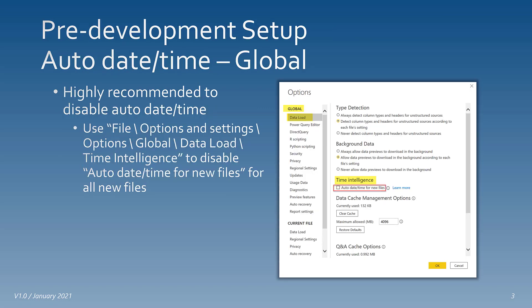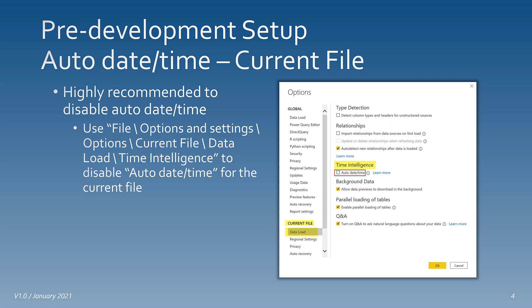The first thing I want to mention is it's highly recommended to disable the auto date/time feature in Power BI. You can do this two ways: globally for all files by going to File > Options and Settings > Options > Global > Data Load and disabling auto date/time for all new files, or you can disable it for the current file by going to its settings as well.